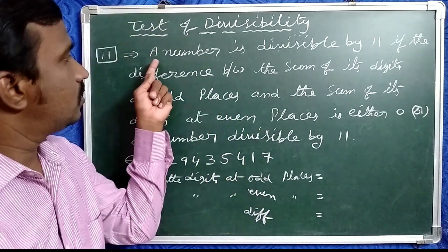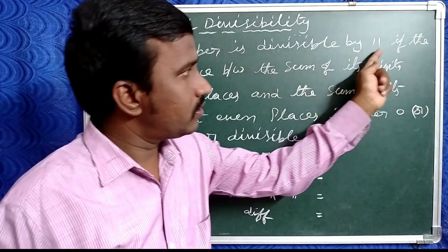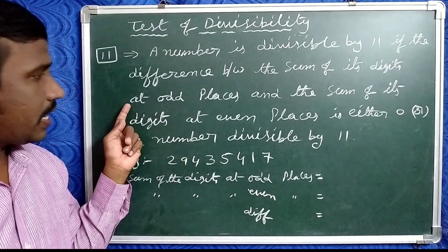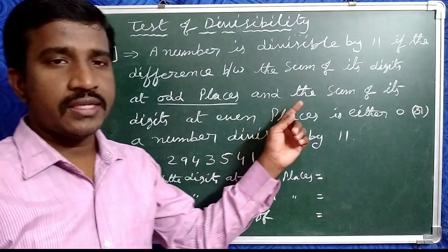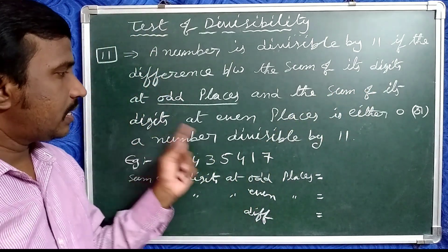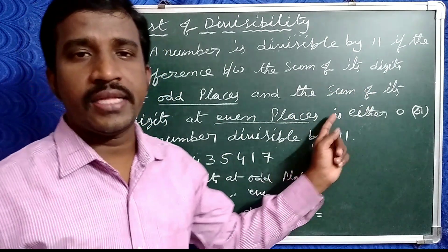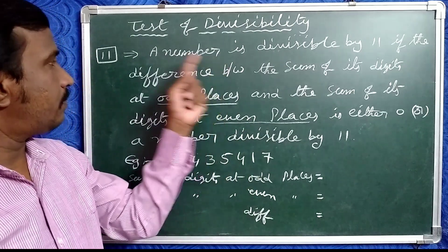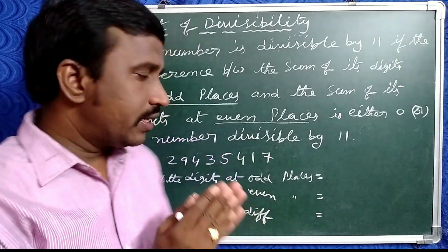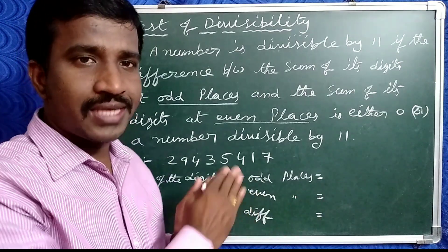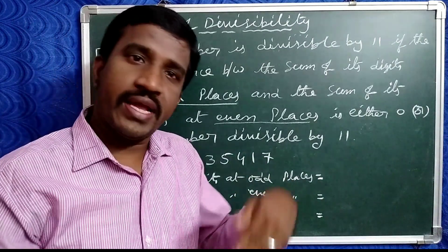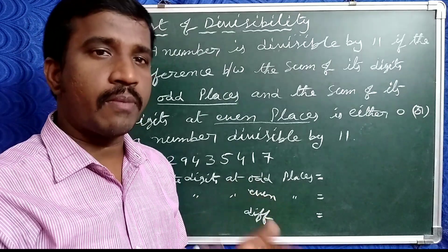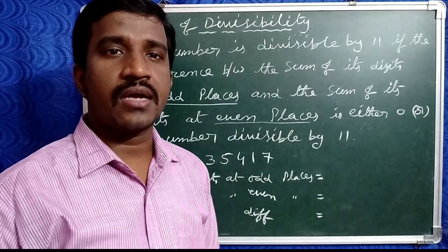Now, let's discuss about 11. A number is divisible by 11 if the difference between the sum of its digits at odd places and the sum of the digits at even places is either 0 or a multiple of 11. Then that number is exactly divisible by 11.